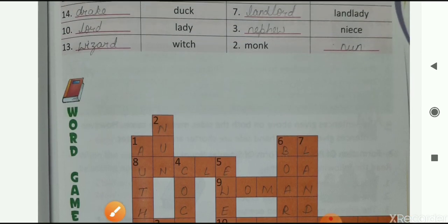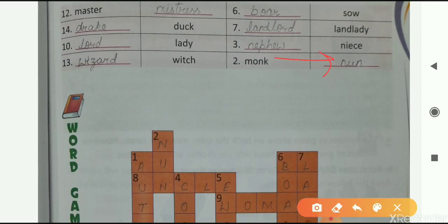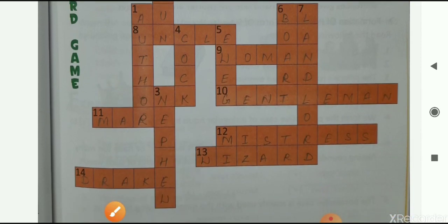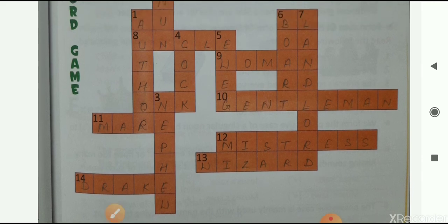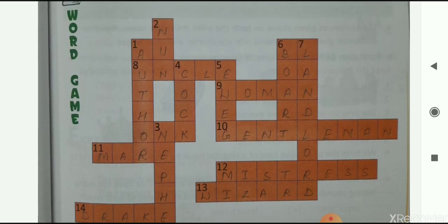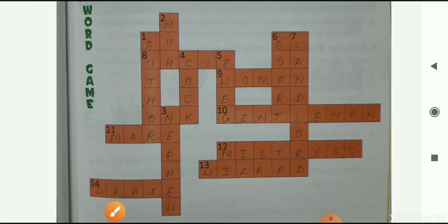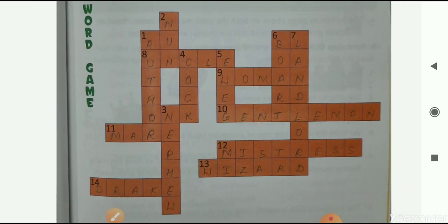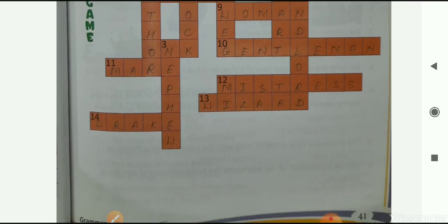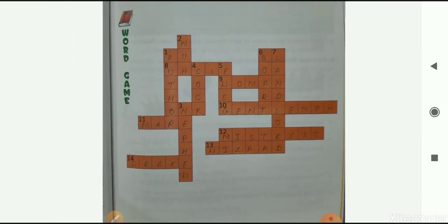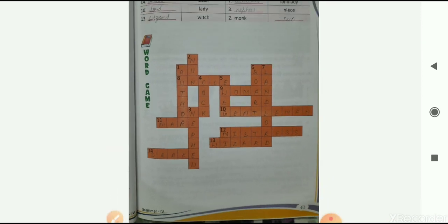Then last one is monk. And feminine of monk is nun, N-U-N. So write here nun on number 2. Here. So you have to fill this word grid. Now exercises of this lesson number seven is completed. You have to fill these exercises in your book. So this is all for today and also you have to learn these exercises in homework. Okay, thank you.